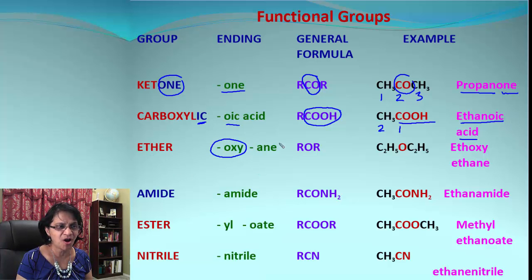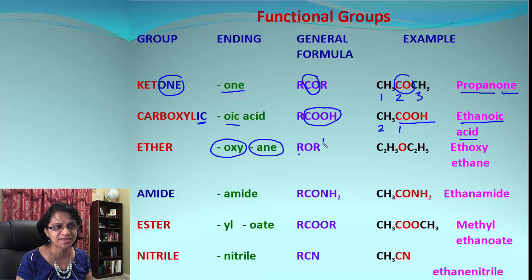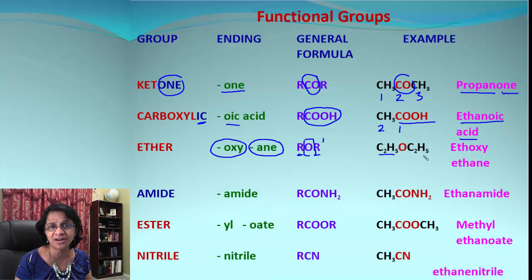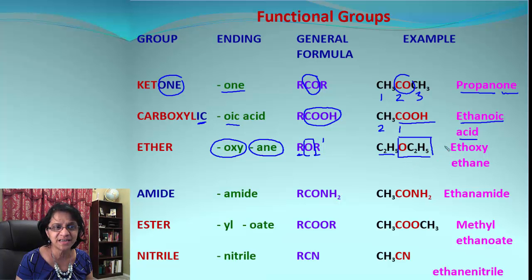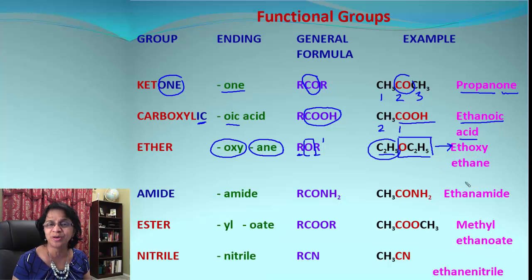Ethers have an oxygen that separates two alkyl groups. In naming, we use '-oxy' for one alkyl group and '-ane' for the other. The general formula is R-O-R'. In the example, we have two ethyl groups separated by one oxygen. We combine one ethyl group with oxygen to call it the 'ethoxy' group, so the name is ethoxyethane.